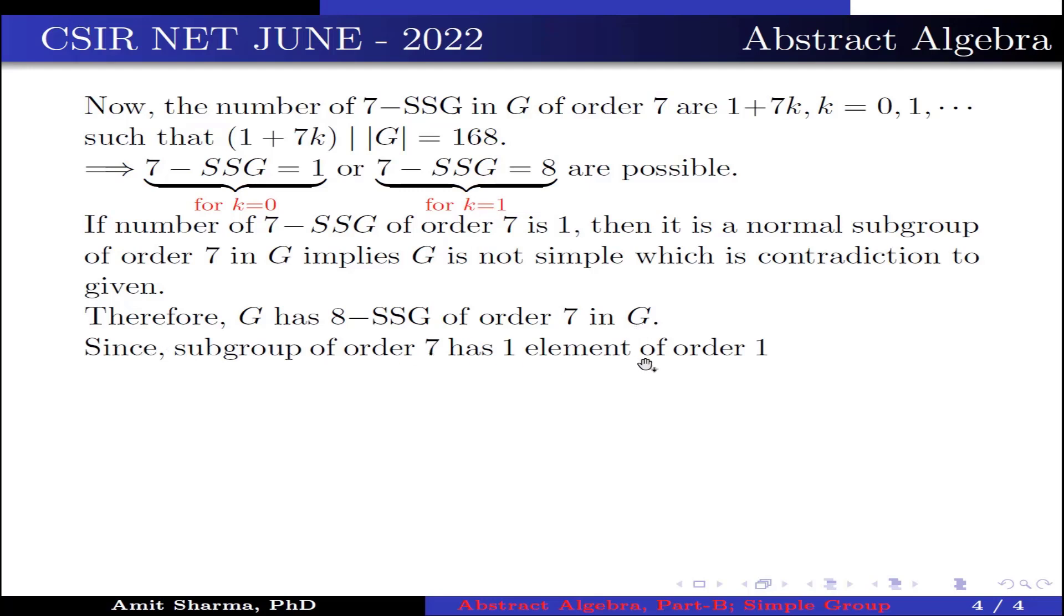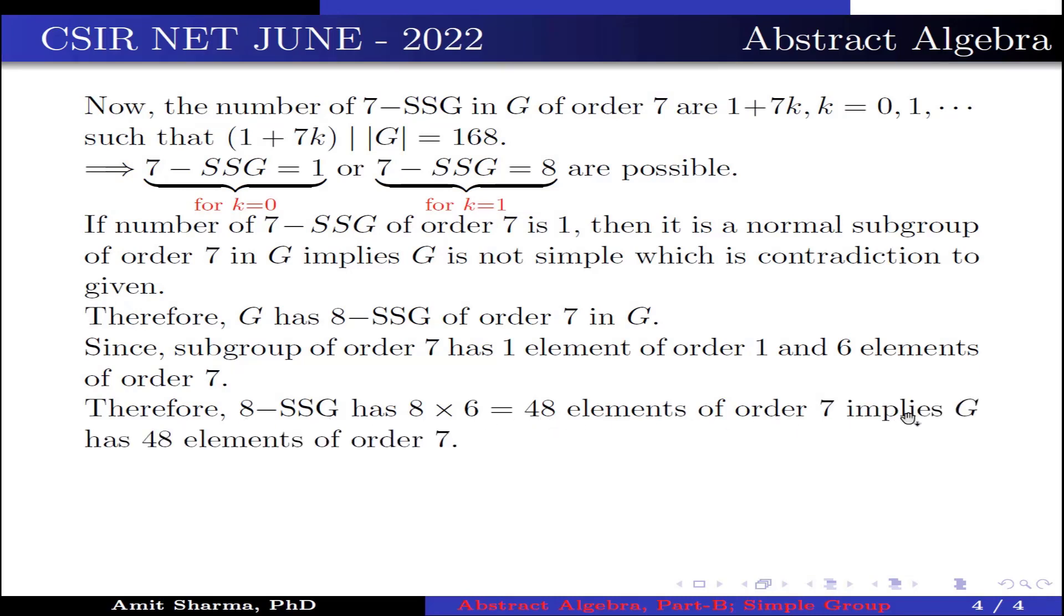Since subgroup of order 7 has 1 element of order 1 and 6 elements of order 7, why it is so? Because the order of elements should divide the order of a group. Therefore, 8-SSG has 8 times 6 equals 48 elements of order 7. This implies G has 48 elements of order 7.